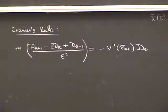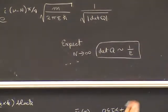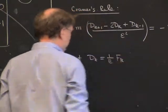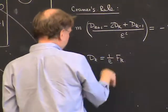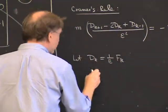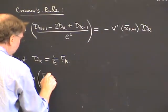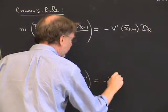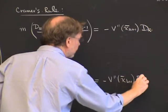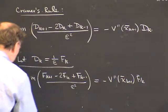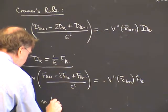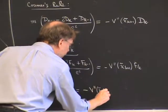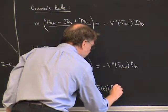Since det(Q) goes as 1/epsilon, let d_k equal 1/epsilon times f_k to scale out the epsilon. The equation becomes the same equation in f_k: (f_{k+1} - 2f_k + f_{k-1})/epsilon^2 equals minus V''(x-bar_{k+1}) times f_k. In the limit N goes to infinity, this becomes the differential equation M times d^2 f/dtau^2 equals minus V''(x-bar(tau)) times f(tau), where tau runs from the initial time zero to the final time t. The boundary conditions are f(0) equals 0 and f-dot(0) equals 1. So there is a definite solution, and f(t) is interpreted as epsilon times det(Q) in the limit N goes to infinity.